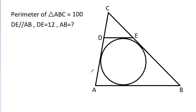In this video, we have been given that the perimeter of triangle ABC is 100, and DE is parallel to AB, and DE is 12. Then we have to find AB.